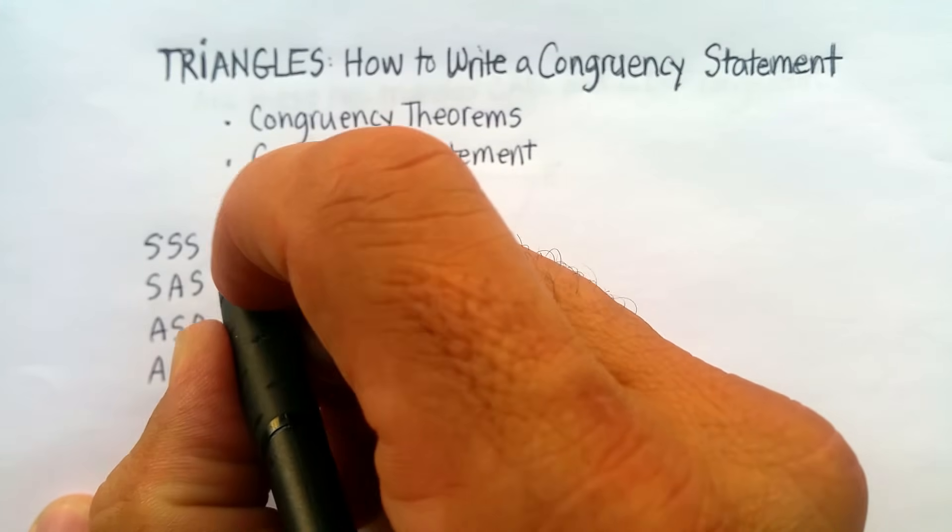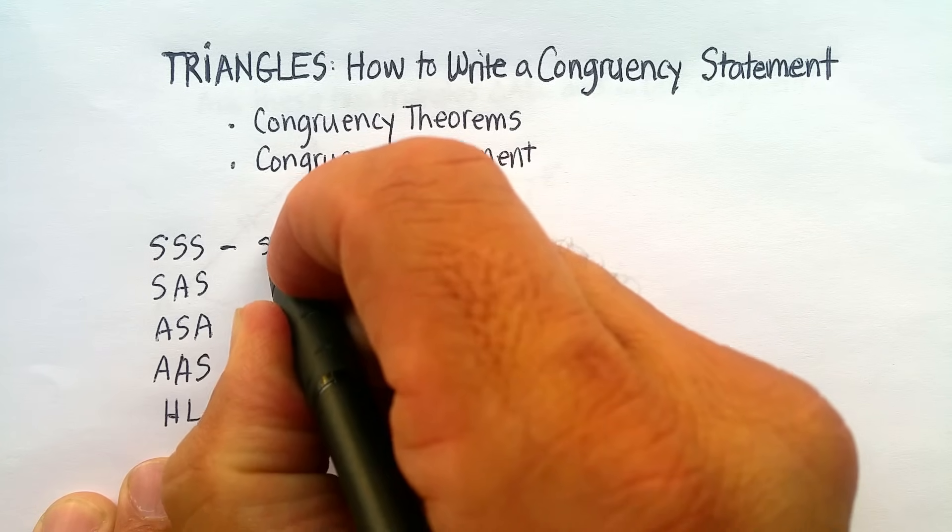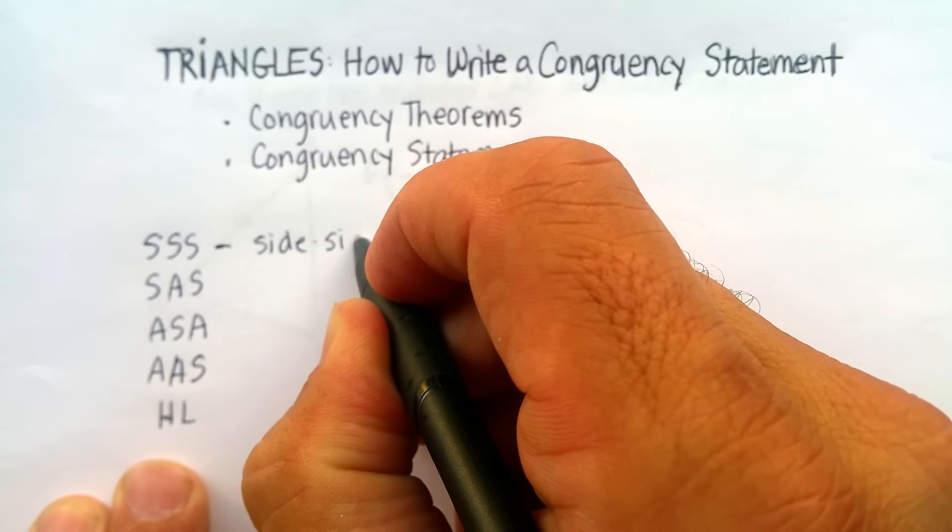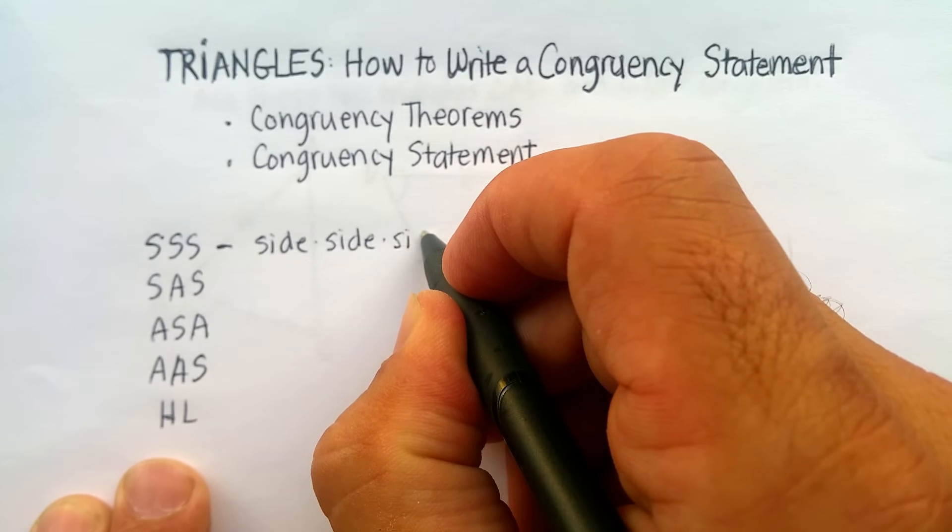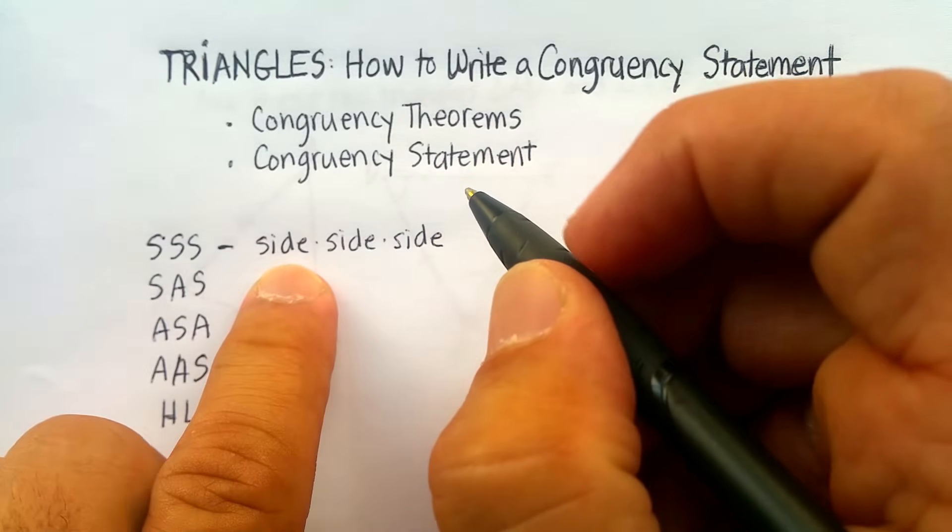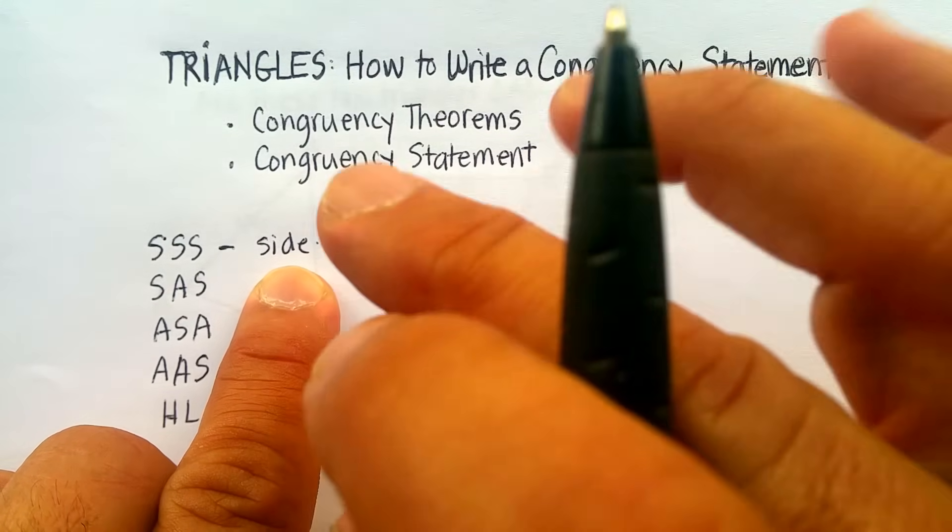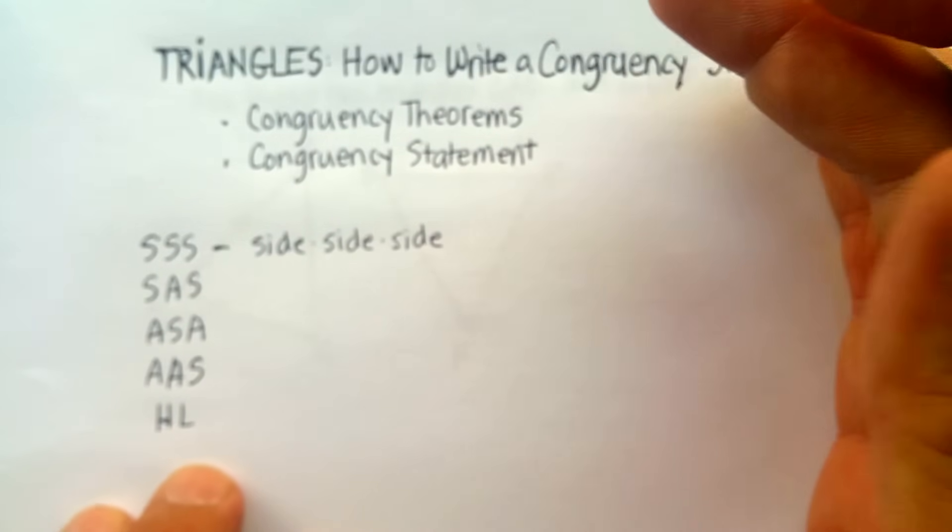SSS is known as side, side, side. So basically what this means is that if the three sides of two different triangles are all congruent, or they're all the same, that means that the angles are the same. In other words, the two triangles themselves are congruent.